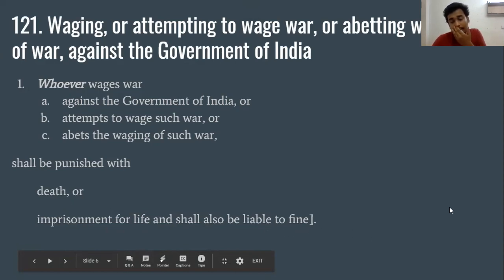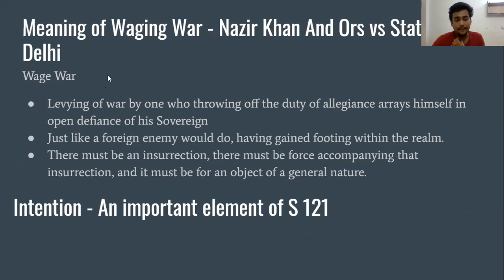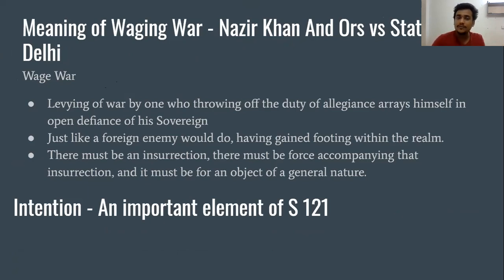Now, let us understand what Waging War means. As given in the case of Naseer Khan and others in the State of Delhi, one of the most important elements is that you have to overpower the sovereign of the state and take their allegiance to yourself — meaning you are making war against the government in power, or making steps for yourself to come to power.